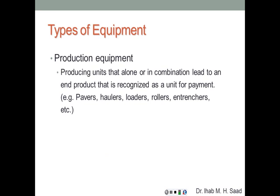When talking about equipment, one major classification distinguishes two types. Production equipment produces units that alone or in combination lead to an end product recognized as a unit for payment. Examples include concrete mixers, asphalt pavers, haulers, loaders, rollers, and trenchers. For example, a trencher produces trench excavation measured in cubic yards or linear feet, which is an end product by itself.